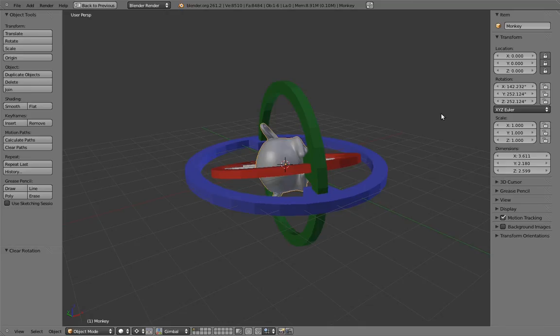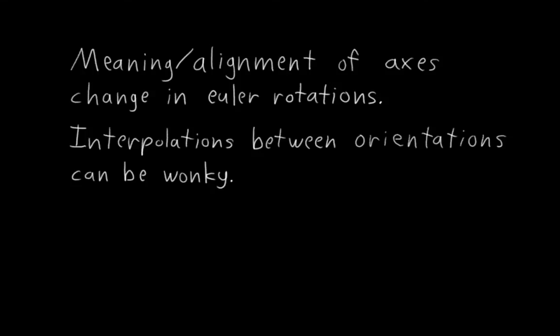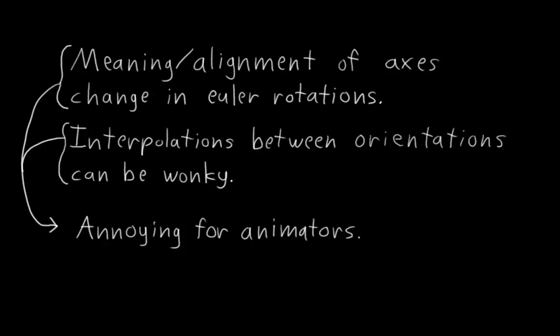Anyway, the point of all this is that the meaning or alignment of the axes change in Euler rotations, so it's not as straightforward as a lot of people think. And these changing axes also mean that interpolation between different orientations can be kind of wonky sometimes, which can be annoying for animators to deal with. So, that's the first gotcha.